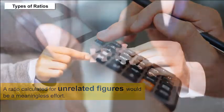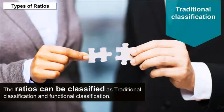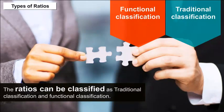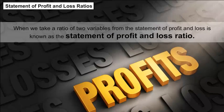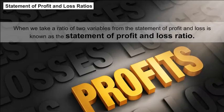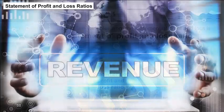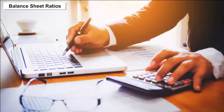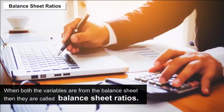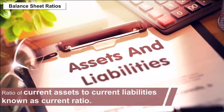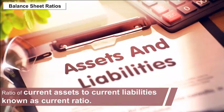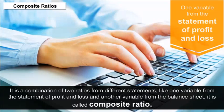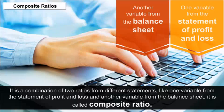Types of Ratios — Traditional Classification: On the basis of traditional classification, ratios can be classified as: Statement of Profit and Loss ratios (both variables from the profit and loss statement, e.g., gross profit to revenue from operations); Balance Sheet ratios (both variables from the balance sheet, e.g., current assets to current liabilities, known as current ratio); and Composite ratios (one variable from the profit and loss statement and another from the balance sheet).